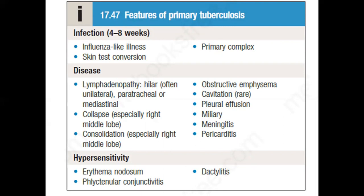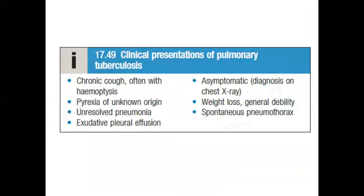To summarize the clinical presentations: in the first four to eight weeks, the patient may present with influenza-like illness, and a tuberculin skin test may be positive. The patient may have enlargement of lymph nodes. On chest examination, findings could include cavitation, miliary tuberculosis, collapse, or consolidation. In immunocompromised patients, the patient may present with meningitis or pericarditis. Otherwise the patient may present with chronic cough, fever, non-resolving pneumonia, pleural effusion, or constitutional symptoms like weight loss and general debility.